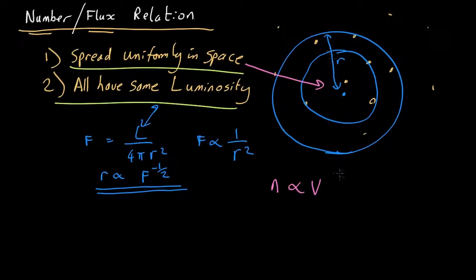The bigger r, the larger the volume, so that's equal to 4 thirds pi r cubed, the volume of a sphere. So what we have is the number we can see is going to be proportional to r cubed. But we know that r is proportional to f to the minus a half, so we end up with a number that's going to be proportional to this cubed, so the flux to the minus 3 over 2.